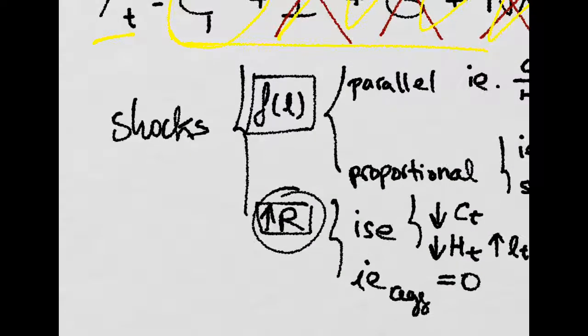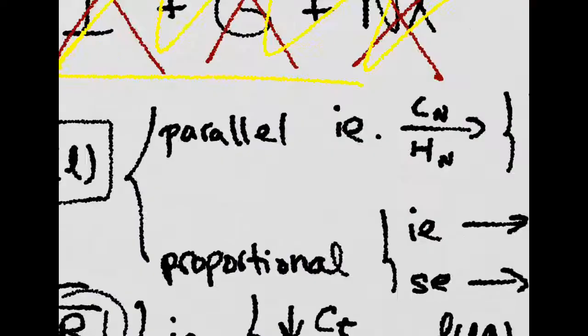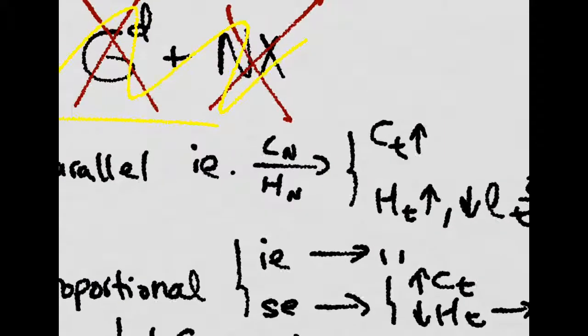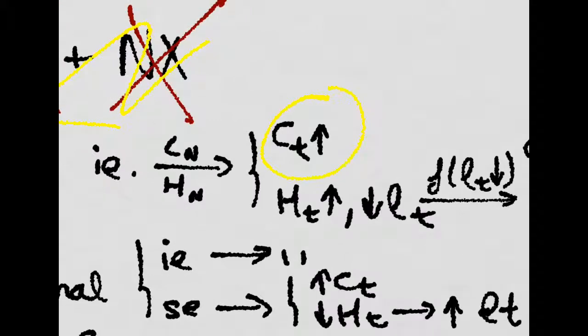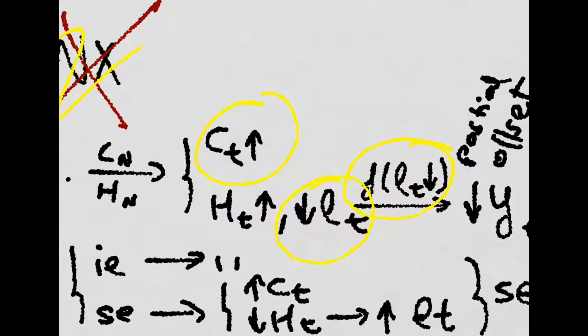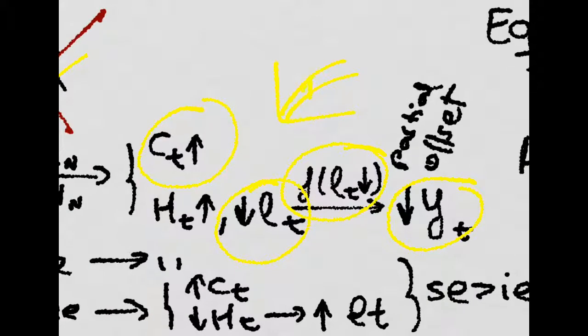We had two basic shocks: shocks in the production function and changes in the interest rate. When there is a parallel shock, there is a positive income effect — consumption increases and labor decreases. For an individual, if labor decreases, then his production will decrease, which will partially offset the initial increase in the production function.